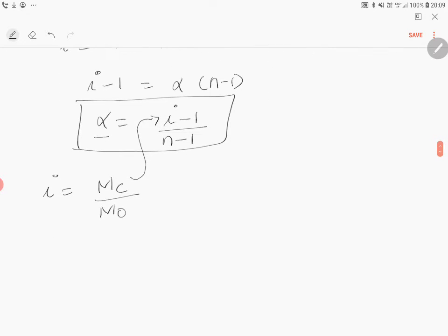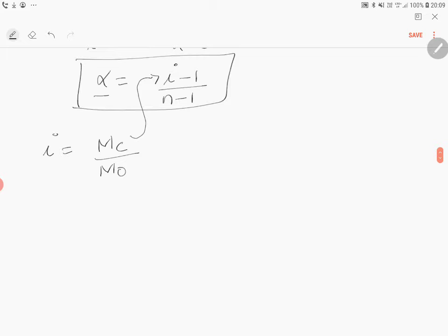I will get an excellent relationship between alpha, observed molar mass, calculated molar mass, n, and van't Hoff factor. So alpha is equal to - instead of i, I can substitute calculated molar mass by observed molar mass. What is Mc? Mc is calculated molar mass, or we can also say theoretical molar mass. And Mo is called observed or experimental molar mass.